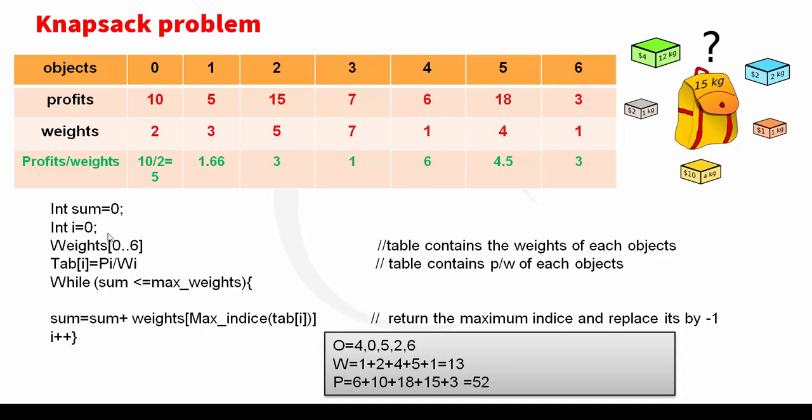So this is the algorithm. I initialize the sum variable by 0 and I variable by 0. Weights is a table from 0 to 6. The table contains the weights of each object. Tab contains P divided by W of each object. And here we have while loop. While sum less than or equals maximum weights, I do this operation. Sum equals sum plus weights max index tab. Max index tab returns the maximum index and replaces it by minus 1.